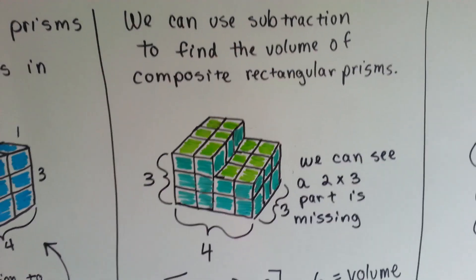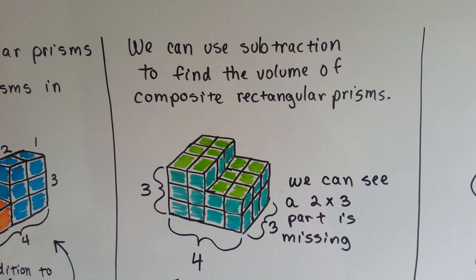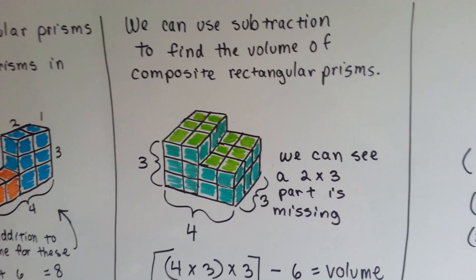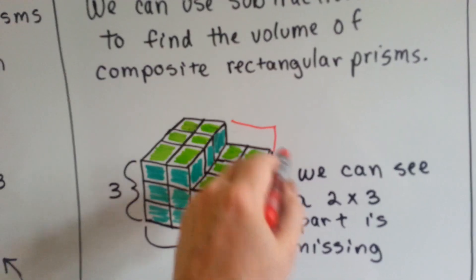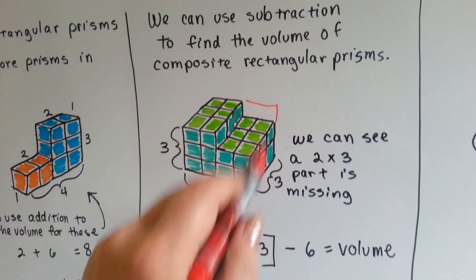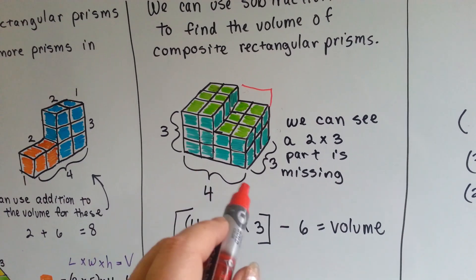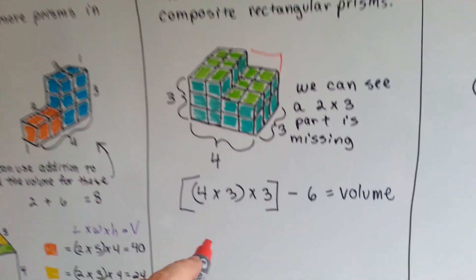What's also cool is that we can use subtraction to find the volume of composite rectangular prisms. What we do is we pretend that they don't have anything missing. We pretend like they're all there. And we do the length times width, 3 times 4, which is 12.